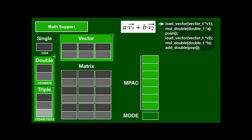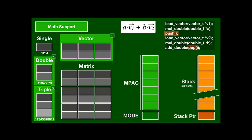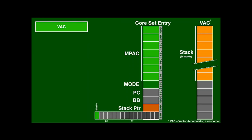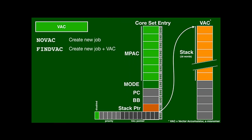In C-like pseudocode, we would load the vector into the MPAC, multiply it with a scalar, save it, do the other multiplication, and add the result to the saved value. Formulas like this need to store intermediate results, so a 38-word stack is provided. If a job uses math code, the MPAC, the mode field, and the stack pointer will be stored in the remaining fields of the core set entry. The stack will be part of a data structure called VAC, which will be pointed to by the core set entry. A job can be created with or without a VAC depending on which subroutine it is created with.